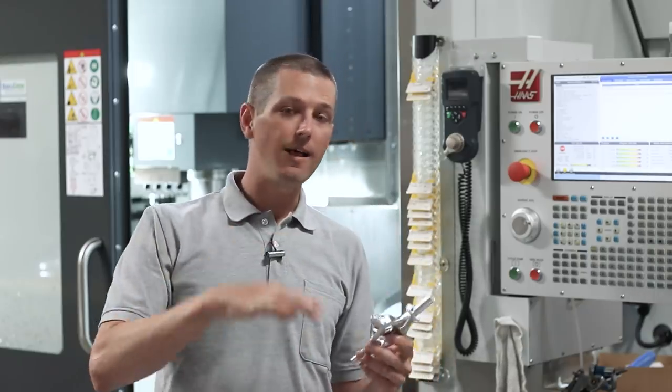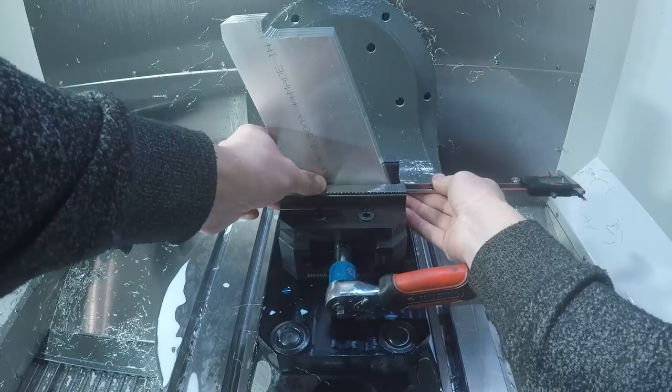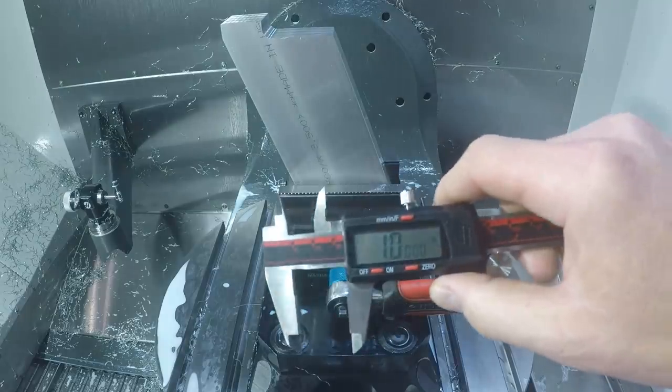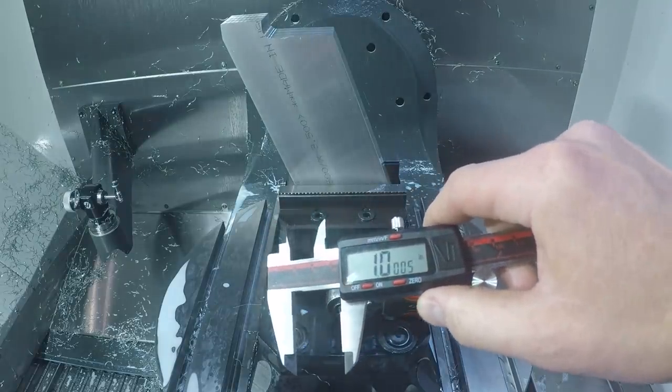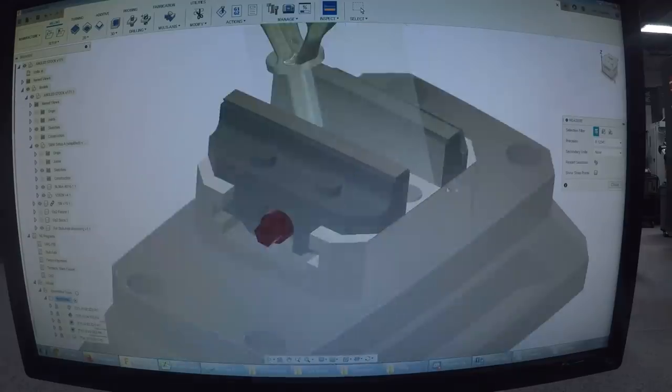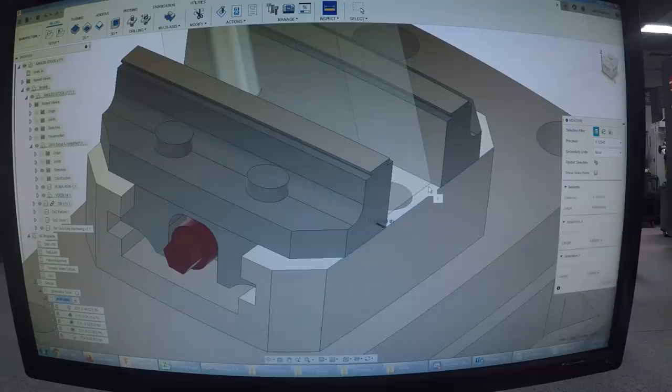One of the keys to this is making sure what you've got at the machine matches what you've got modeled in Fusion. And so for us, we've got the solid models of the RockLock base, the vise, and then our stock, and we're just using calipers to make sure when we put that stock into the vise and we locate it, it matches up. That gives me the confidence to know we've got the stock located correctly, and when we run simulation, the results that we're going to get will match what happens on the machine.